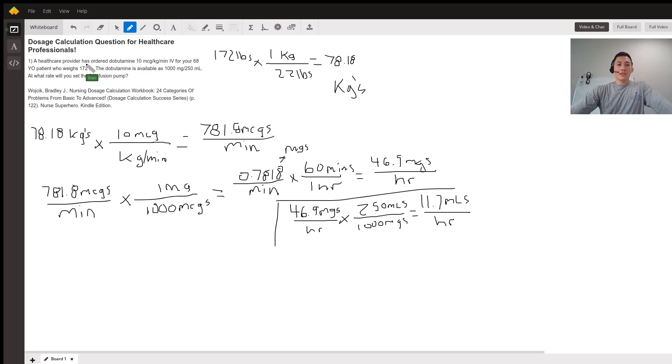First off, if we have a weight in pounds, let's convert that to kilograms. Quite a few medications are weight-based. In this case, dobutamine is based on kilograms. So we need to convert 172 pounds to kilograms, and we do that using dimensional analysis. We set it up here.